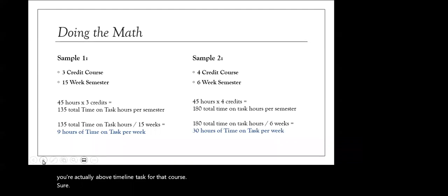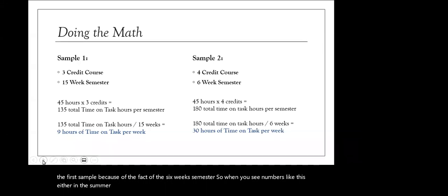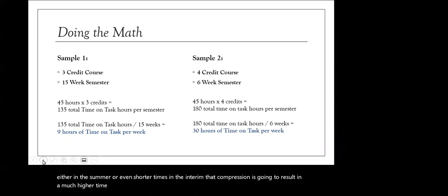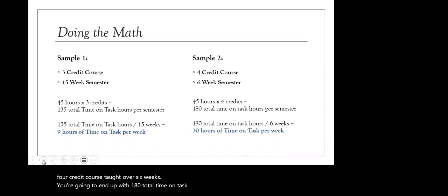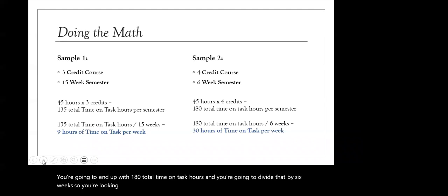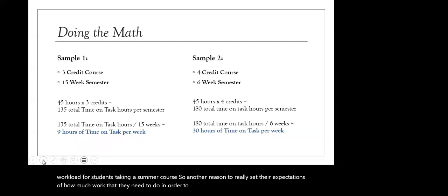Sample two shows a different breakdown — really different because of the six-week semester. When you see numbers like this, either in the summer or shorter interim periods, that compression results in a much higher time on task per week. For a four-credit course taught over six weeks, you end up with 180 total time on task hours. Dividing by six weeks means 30 hours of time on task per week — obviously a much higher workload for summer students, which is another reason to really set their expectations about how much work is required.